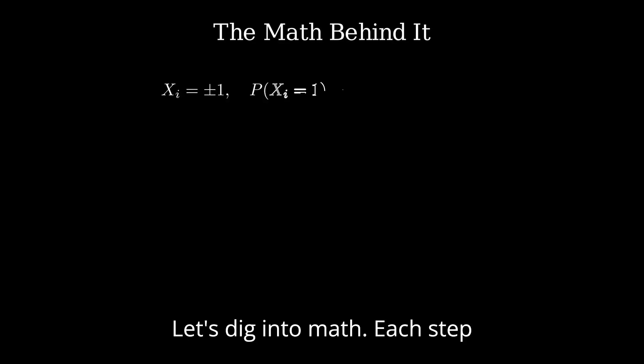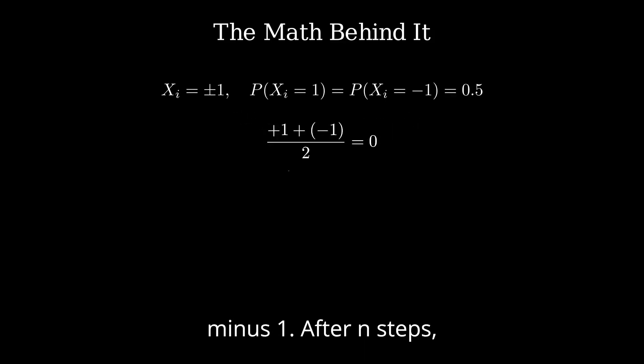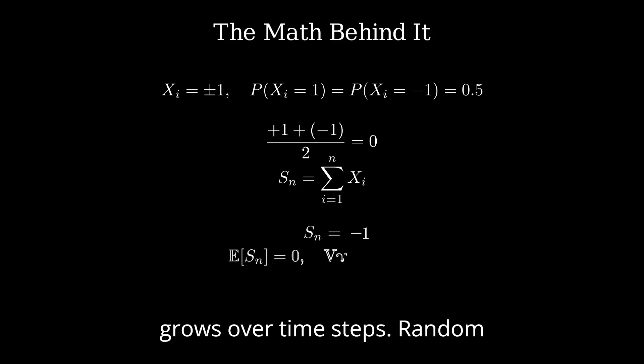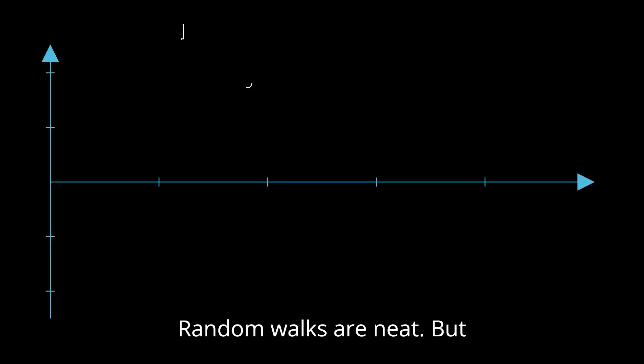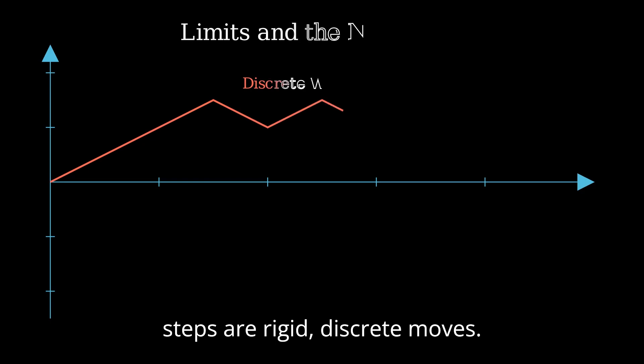Let's dig into the math. Each step is X_i = ±1. After n steps, S_n adds them up. Expected value is zero; variance equals n—it grows over time steps. Random steps define stochastic processes. Random walks are neat, but steps are rigid, discrete moves.